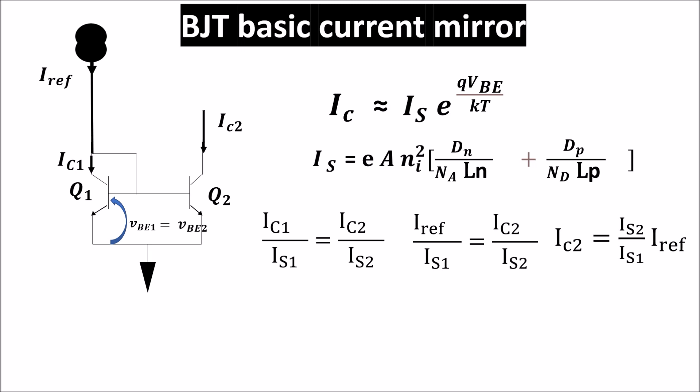This also shows that it is difficult to build good current mirrors with discrete components. We are able to match the BJTs just in integrated circuits. We see also another opportunity we have only in integrated circuits.